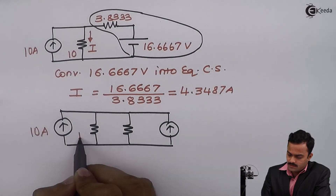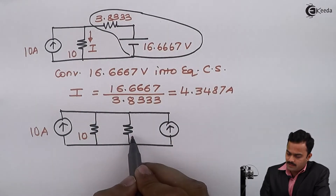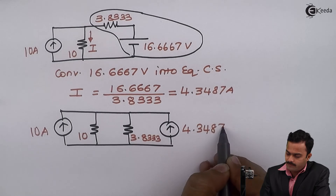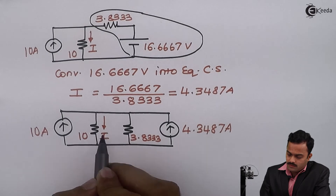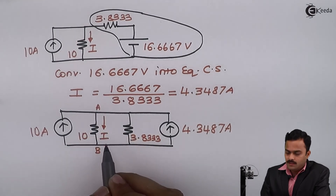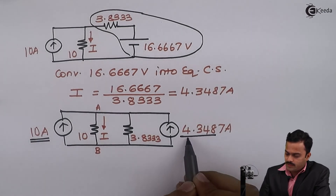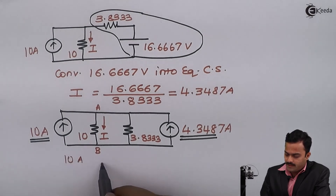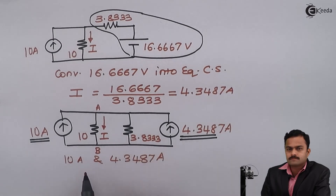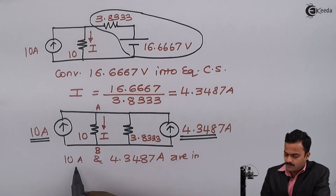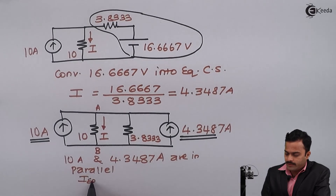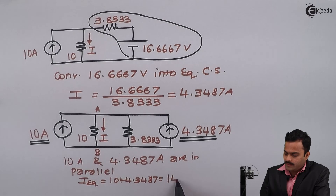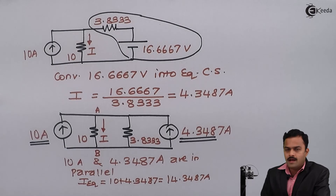In the redrawn circuit: 10 ampere as is, 10 ohm as is, 3.8333 ohm comes in parallel with the equivalent current source of 4.3487 ampere. Now, the 10 ampere and 4.3487 ampere sources are in parallel since nothing is connected between them. The resultant equivalent current is the addition of 10 and 4.3487, giving 14.3487 ampere.